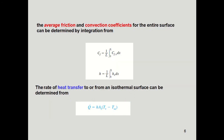The average friction and convection coefficients are calculated as follows. The average friction coefficient C_f = (1/L) ∫ C_f(x) dx, and the average heat transfer coefficient h̄ = (1/L) ∫ h(x) dx. Once the average heat transfer coefficient is found, it is substituted into the heat transfer rate formula: q̇ = h̄ · A_s · (T_s − T_∞), which gives the rate of heat transfer to or from an isothermal surface.